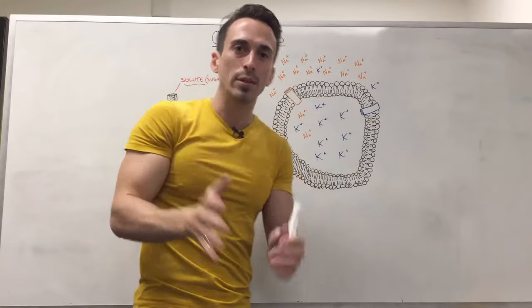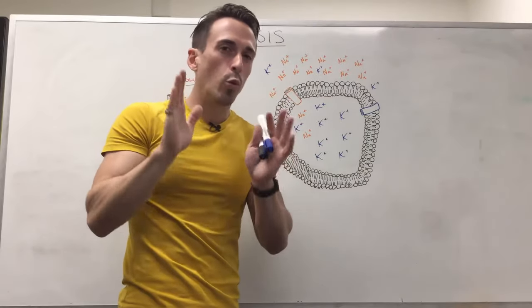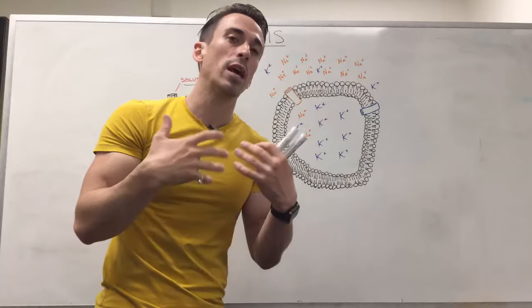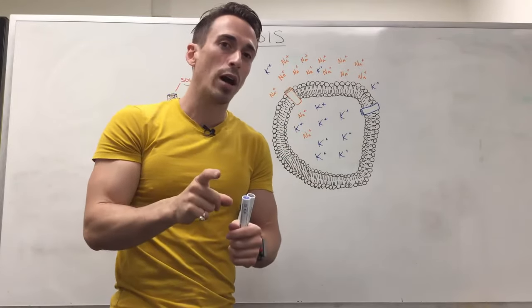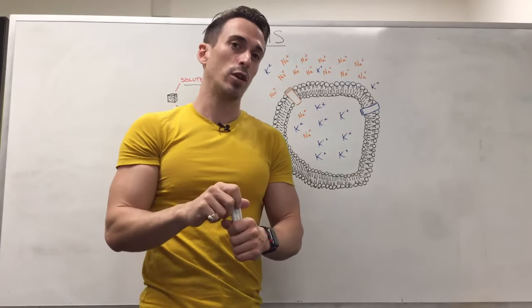Now when you've got this unequal concentration of stuff outside the cell compared to inside the cell, what happens? If the solutes can't move, what moves? Water moves. And remember water is going to move from its area of high water concentration to its area of low water concentration, or it's going to move from its area of low solute concentration to its area of high solute concentration.